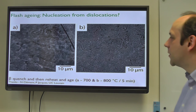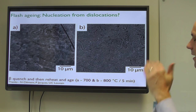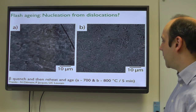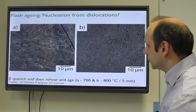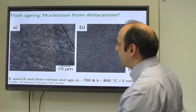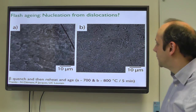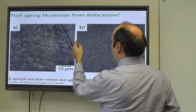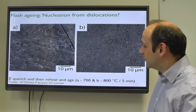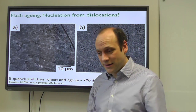Colleagues in Belgium quenched Ti-5553 from the beta, then reheated almost instantaneously to 700 or 800°C, held for five minutes and quenched - a very contrived heat treatment that couldn't be done on a large section. The result shows alpha that formed in a circular way around what looks like a dislocation, with some more circular nucleation events. Since the beta has very few dislocations after recrystallization, this suggests that dislocations can also be used as nucleation sites for the alpha phase.